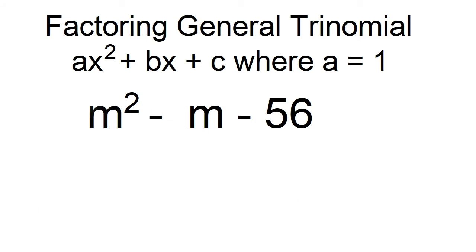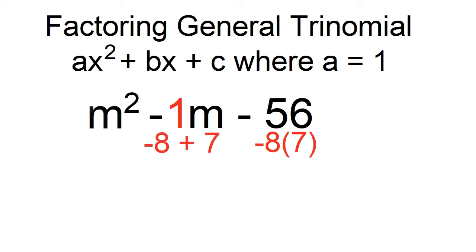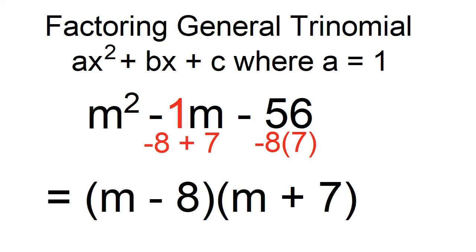Factor m squared minus m minus 56. In this example, b is negative 1 and c is negative 56. Think of two numbers that will give you a product of negative 56 and a sum of negative 1. The numbers are negative 8 and 7. The factors are m minus 8 and m plus 7.